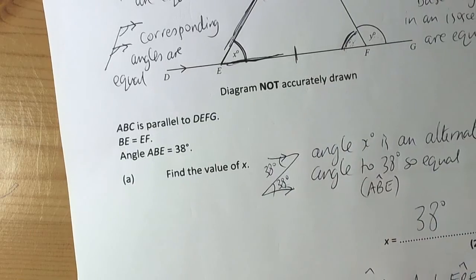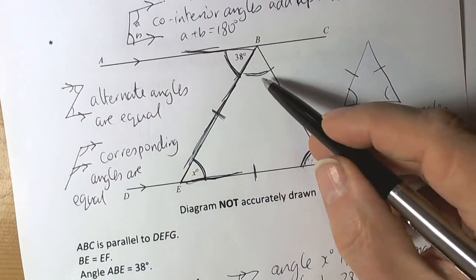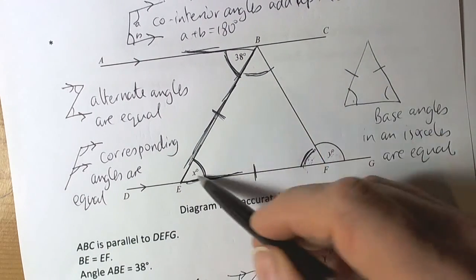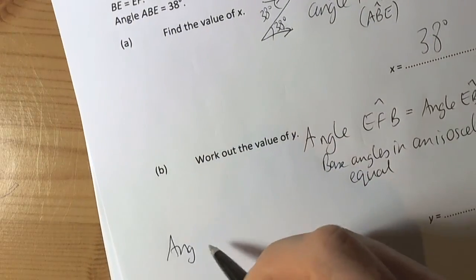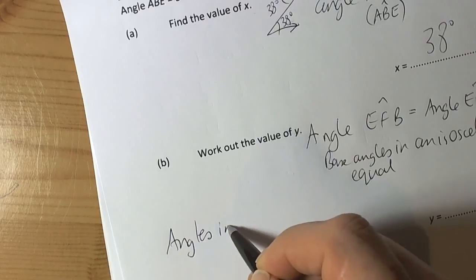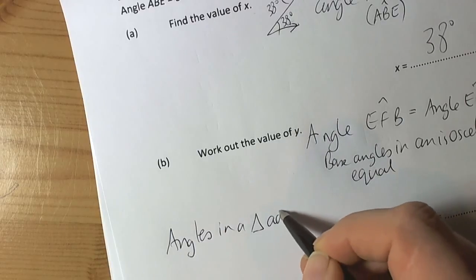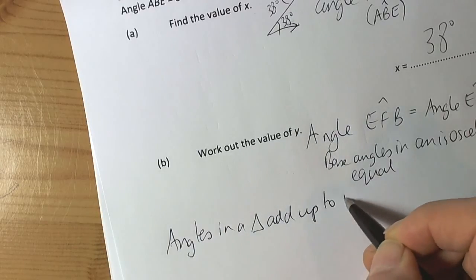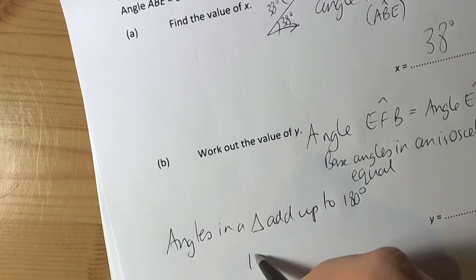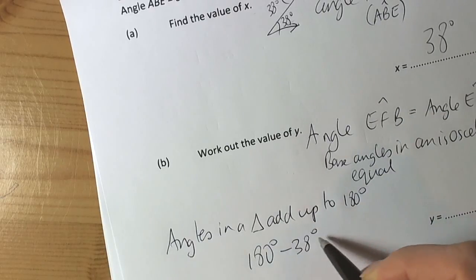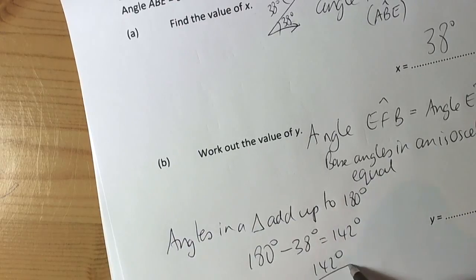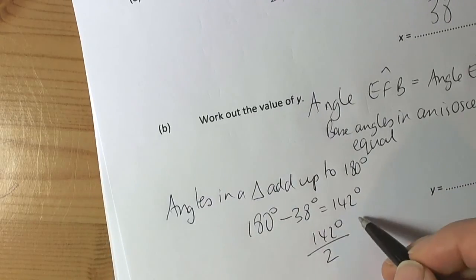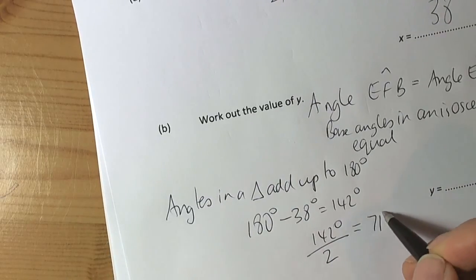I also know that because these two are equal, angles in a triangle add up to 180 degrees. So I'm going to be doing 180 take away the 38 degrees which was inside the triangle. That's going to be 142 degrees. I'm then going to be doing 142 degrees halved because the base angles are equal, so it's 71 degrees.